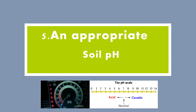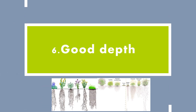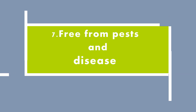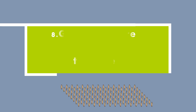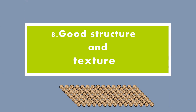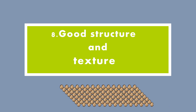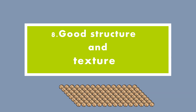Four, a fertile soil should have an appropriate pH. Five, a fertile soil has a good depth — deep soils afford plant roots a greater volume to exploit. Six, a fertile soil is free from pests and diseases. Seven, a fertile soil has a good structure and texture, which results in well-drained soil.